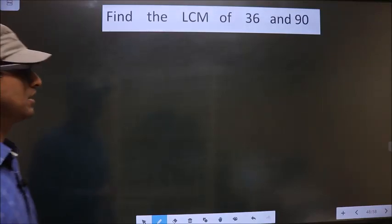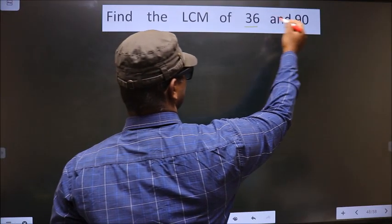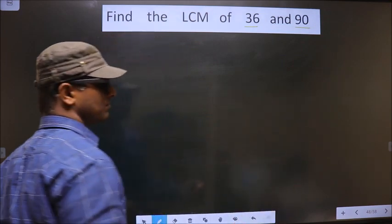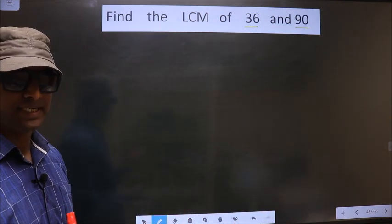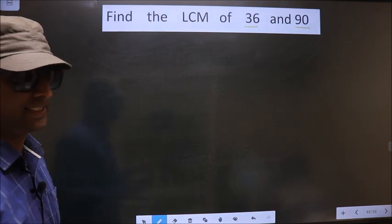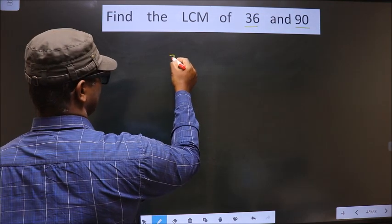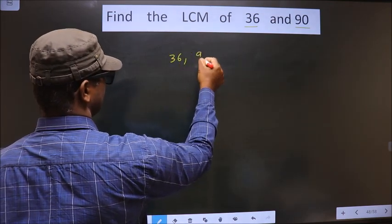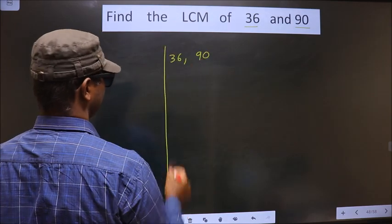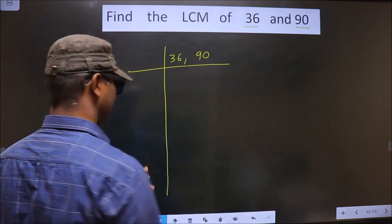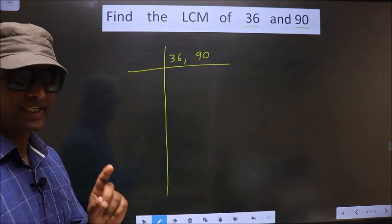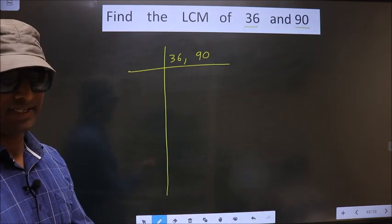Find the LCM of 36 and 90. To find the LCM, first we should frame it in this way. See, 36, 90. This is your step 1. Next.